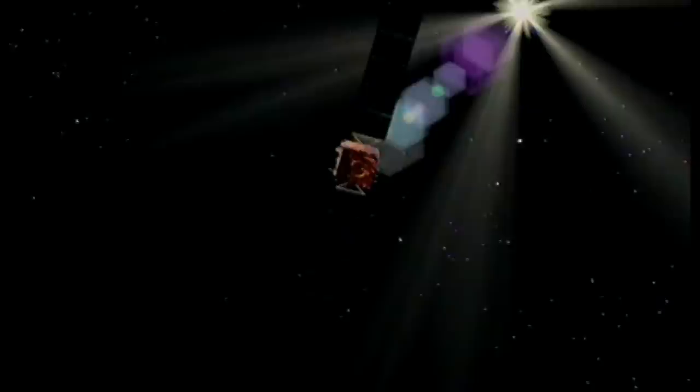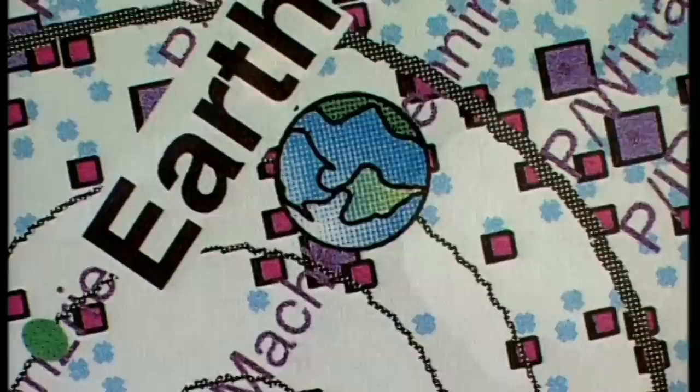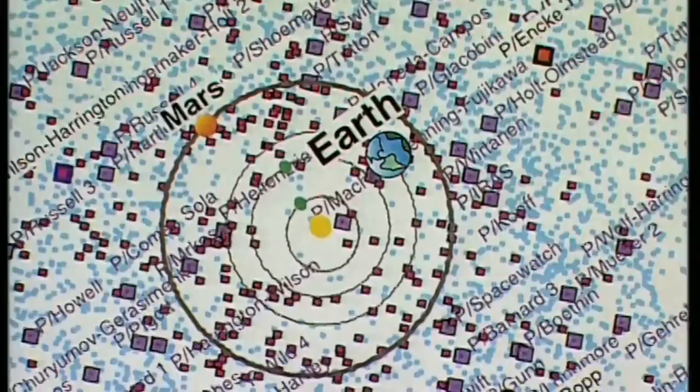La sonde Rosetta a pour mission de s'approcher au plus près de cet astéroïde. Lancée en 2003, elle survolera deux astéroïdes et valsera avec la comète Virtanem. Un module d'atterrissage, elle analysera le noyau.